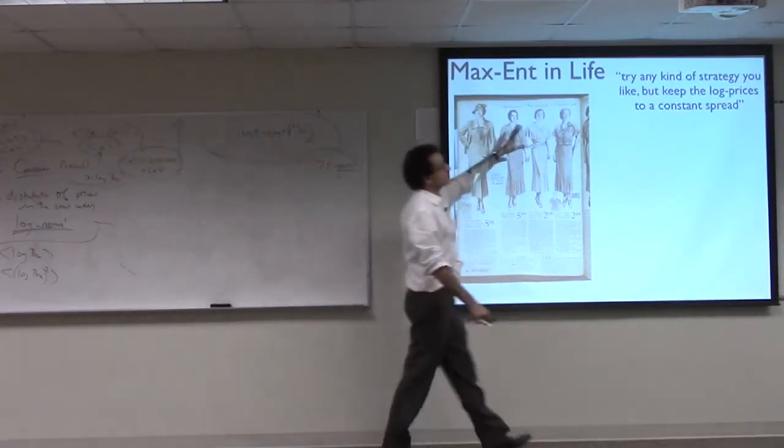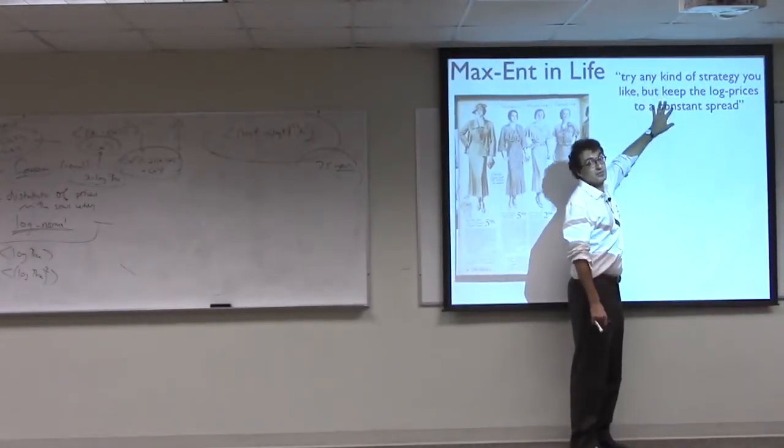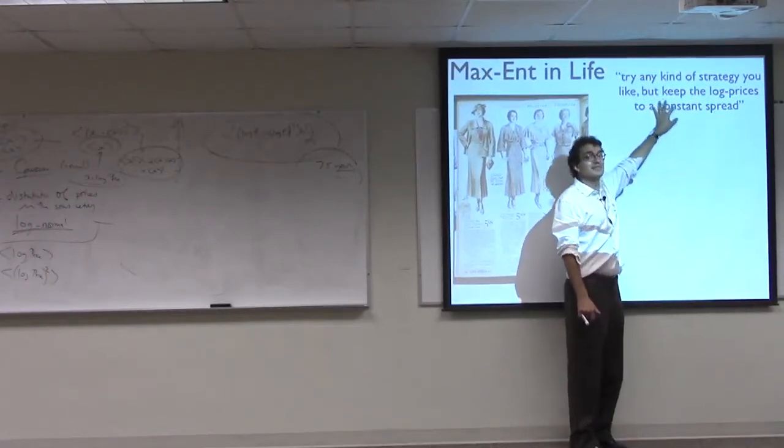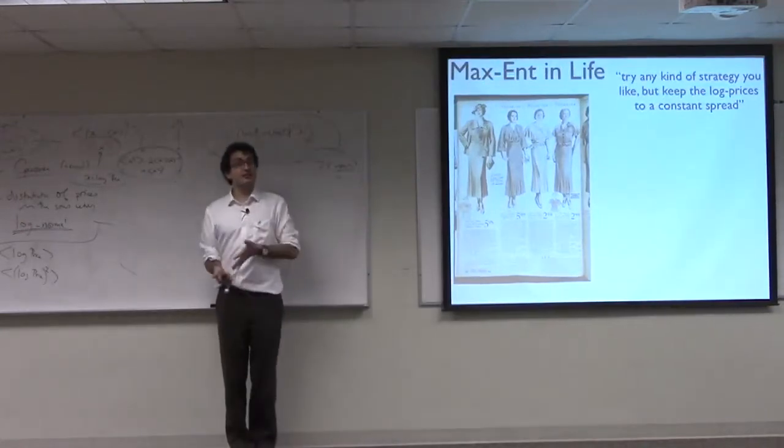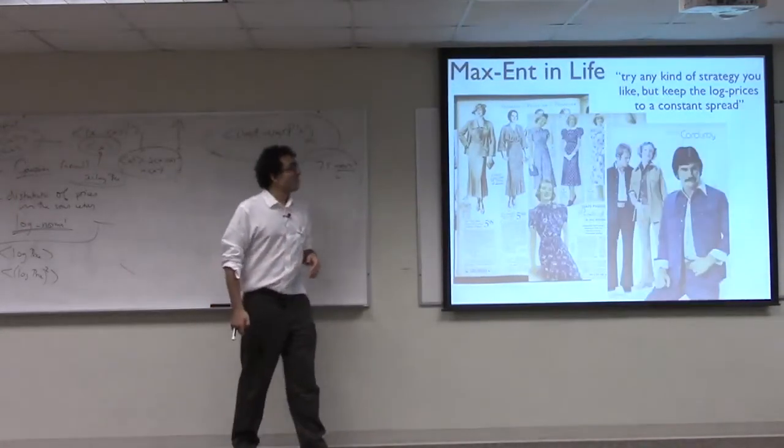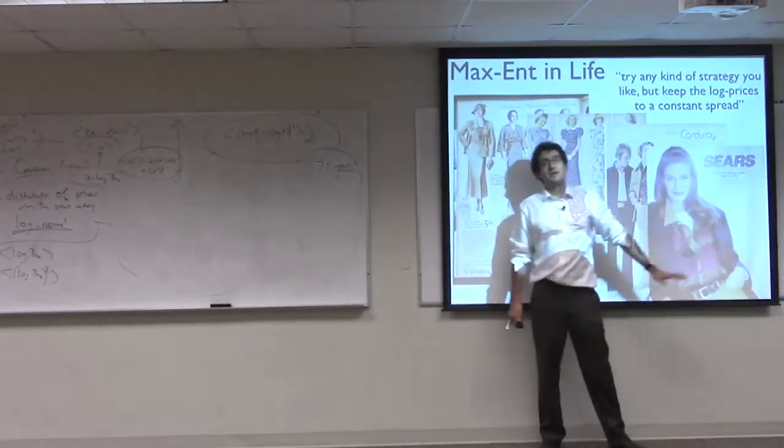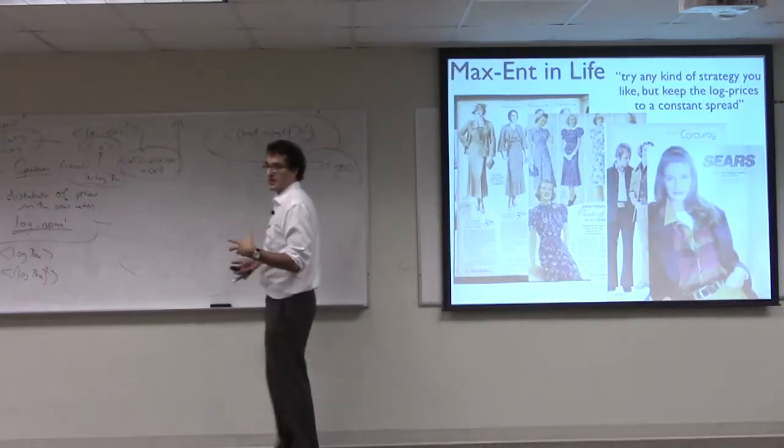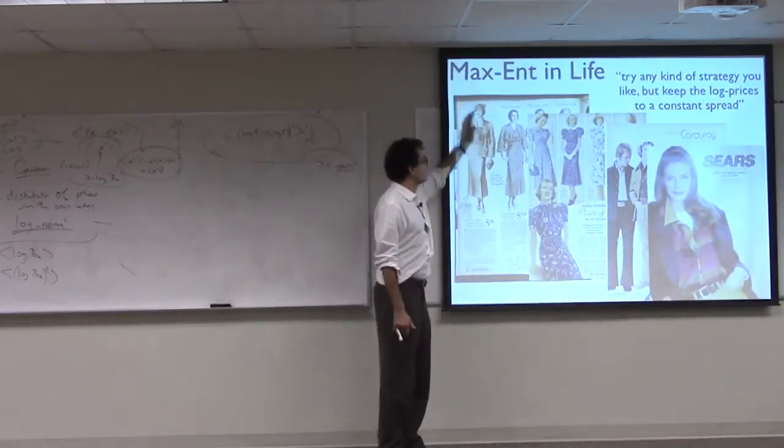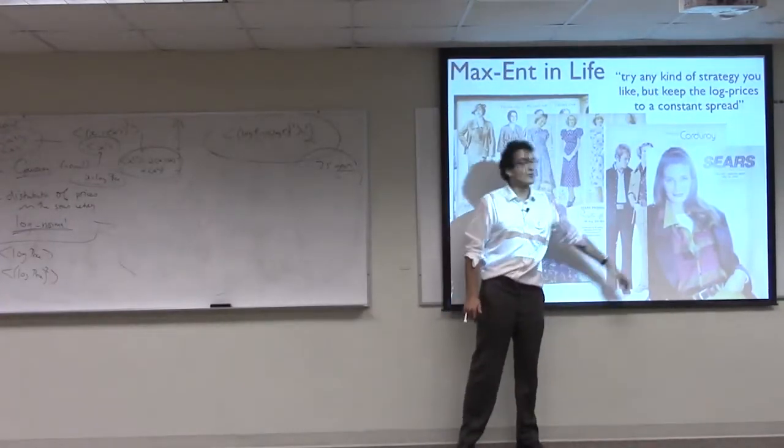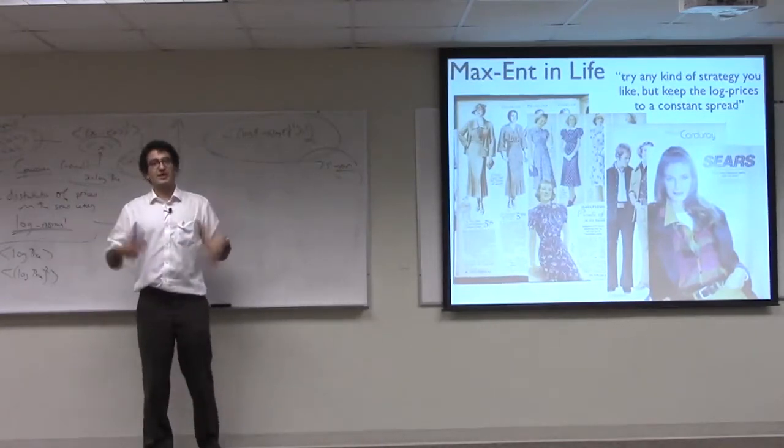So the idea is that this strategy that Sears-Roebuck pursues, whether or not it's conscious, is certainly a beneficial one for the corporation as a whole. It makes it potentially easier to sell goods by keeping the range not too large and not too small. And what happens as we grow as a nation over time and as people cycle through the system of Sears-Roebuck, as they cycle through the pricing system, and we go from selling dresses that look like this to selling dresses that look like this or women's clothes that look like this, people try all sorts of strategies.